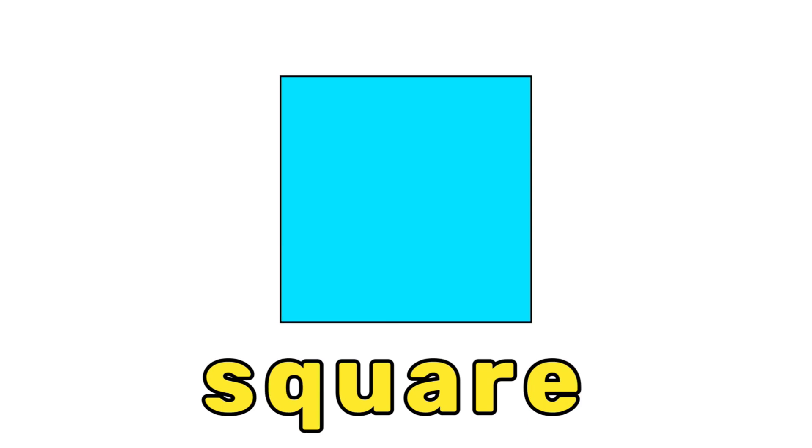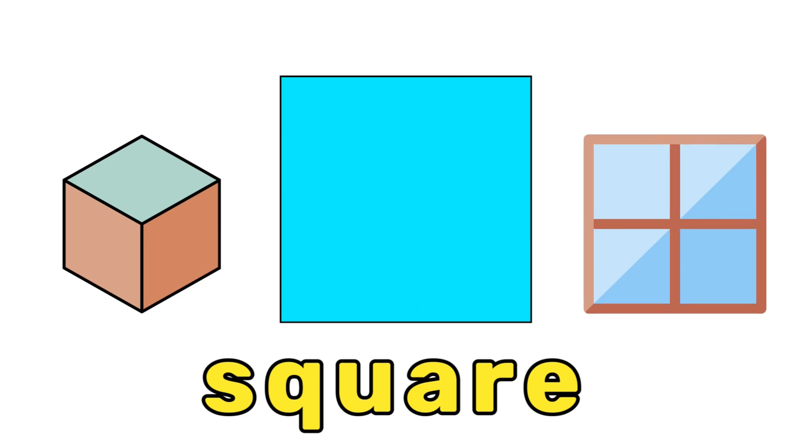This is a square. Can you say square? A square has four equal sides, like a box or a window. Say it with me. Square.